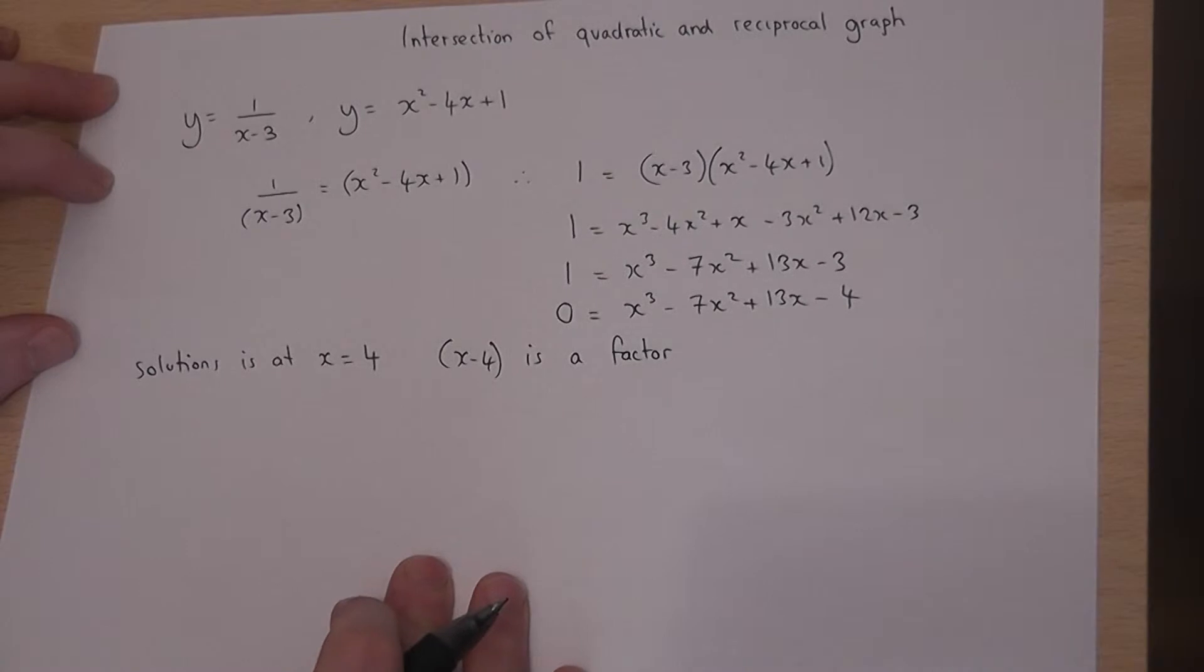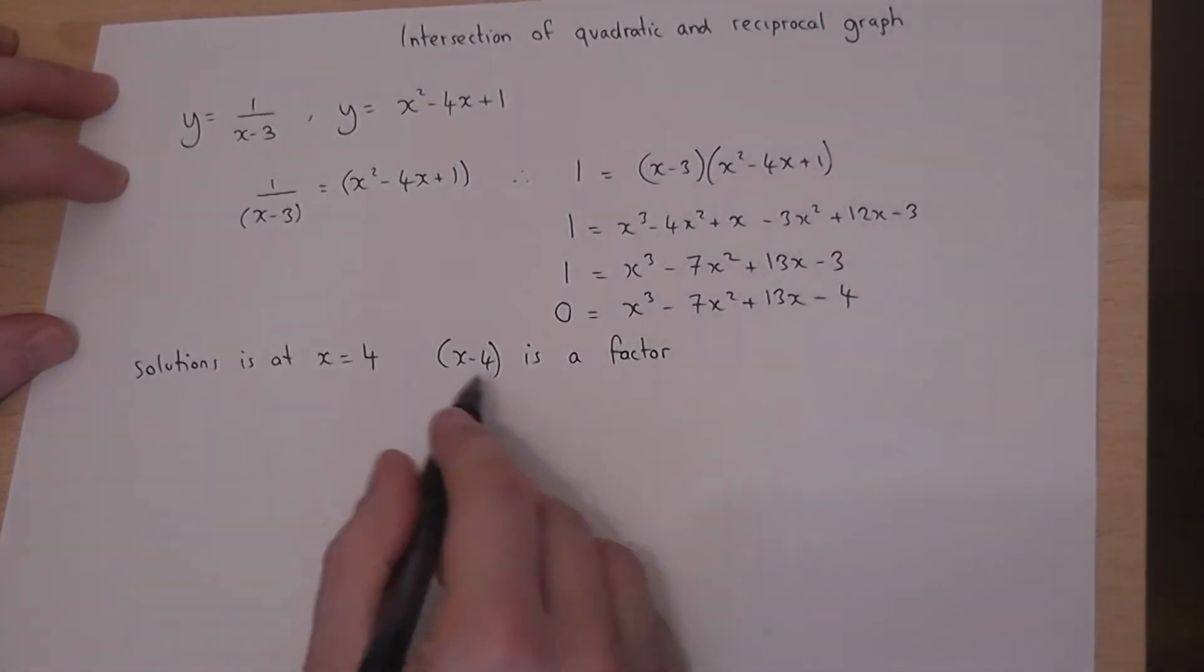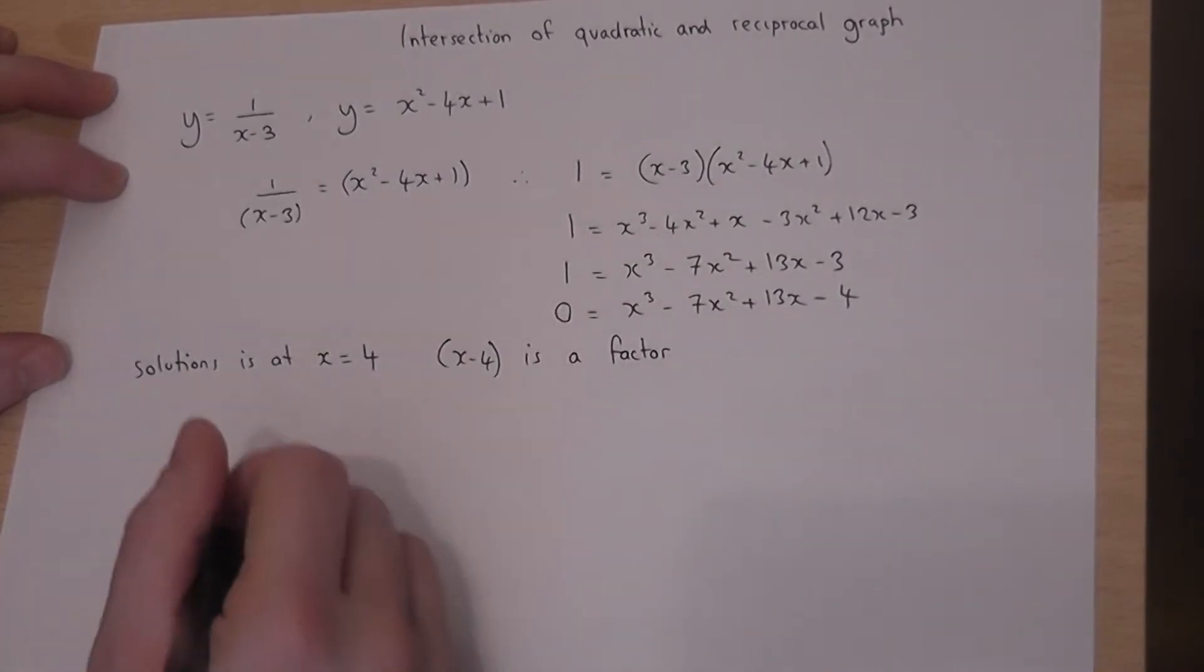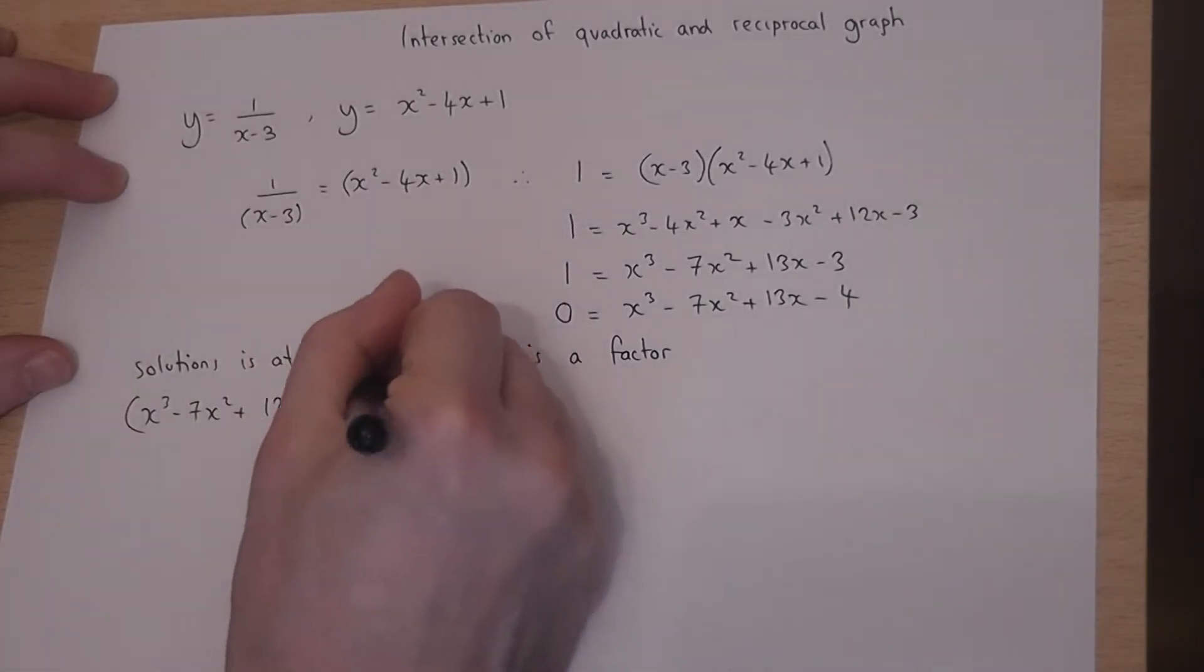So to find the other factors and hence the roots, I divide this expression by (x-4). So I want to work out what x³ - 7x² + 13x - 4 divided by my factor is.